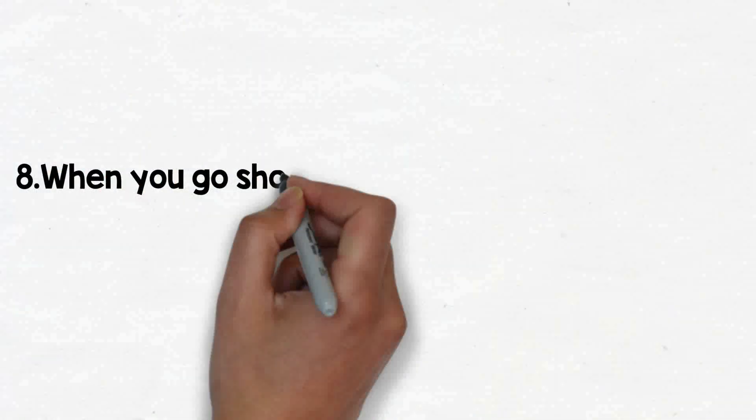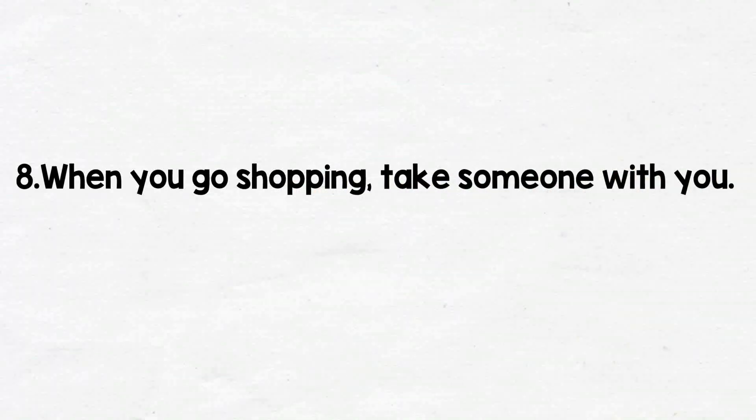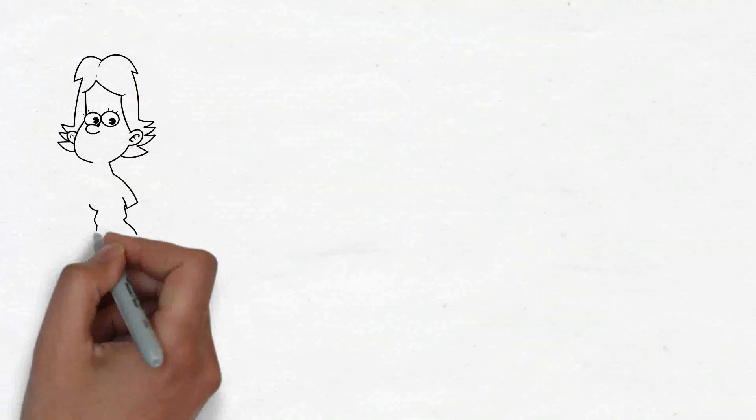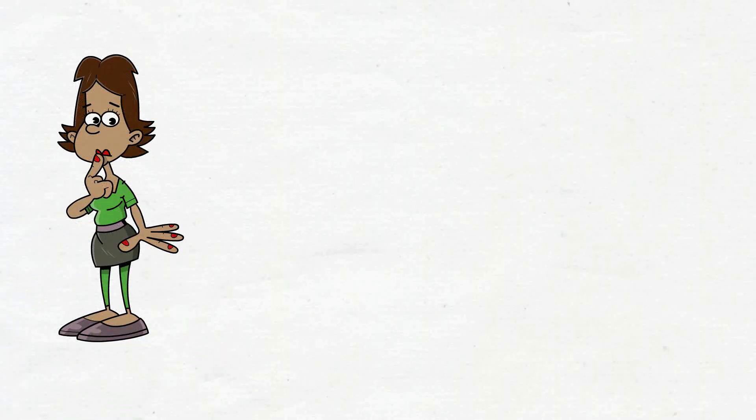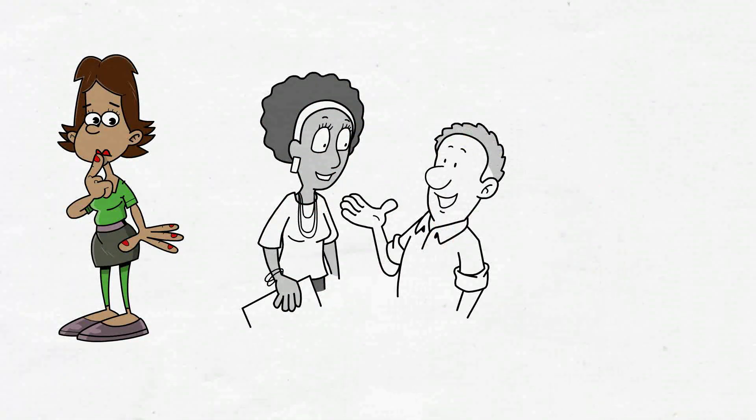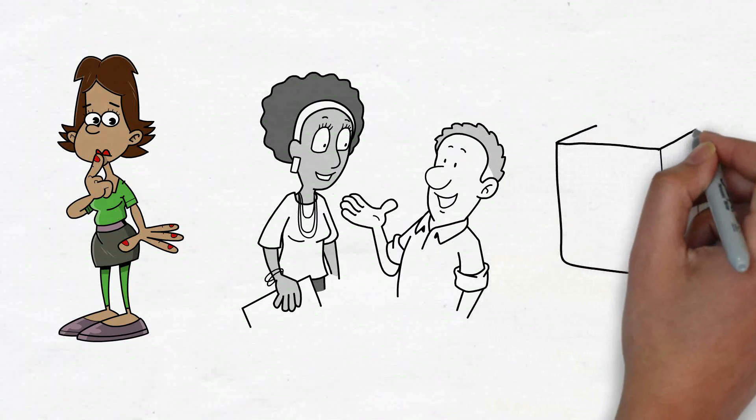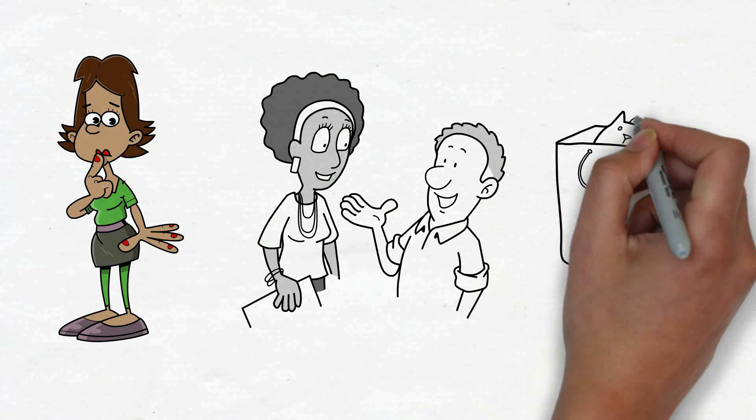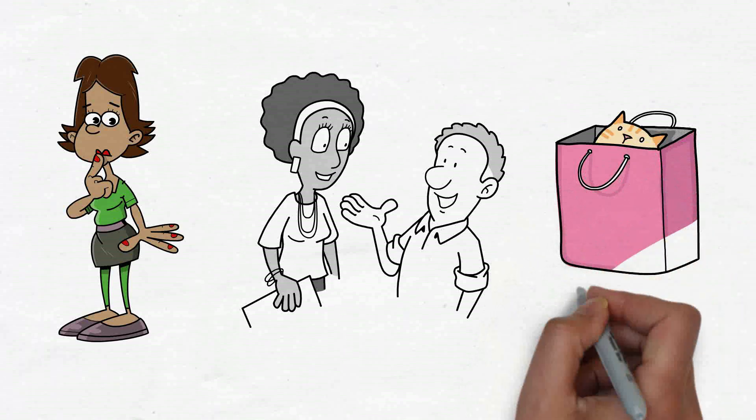8. When you go shopping, take someone with you. Accountability is crucial in this situation. Do you have a brother or a friend who won't hesitate to confront you and urge you to not make a purchase? Bring them along when you go shopping. Tell them you intend to purchase and urge them to talk sense into you if you veer off course.